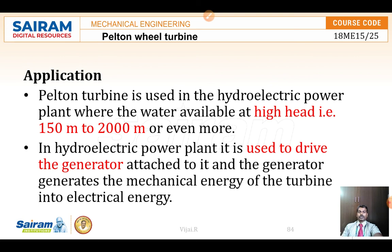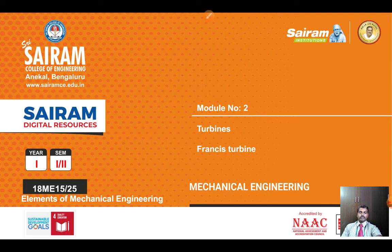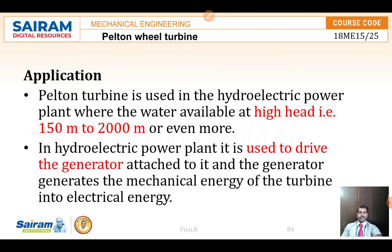The Pelton Wheel Turbine is used in high head applications — that is, 150 to 2000 meters of height — and it is used to drive a generator attached to the turbine. The main concept is to convert the energy of water into rotary energy, and that rotary shaft is connected to a generator which produces electricity. In the next video, we will see the Francis Turbine and the differences between the Pelton and Francis turbines.